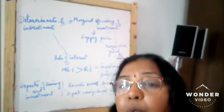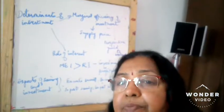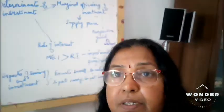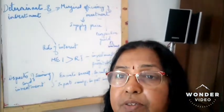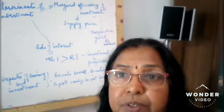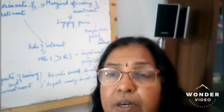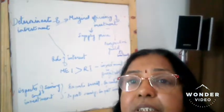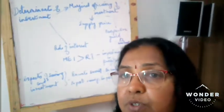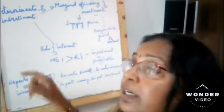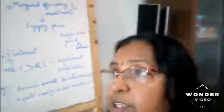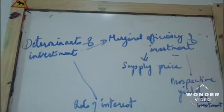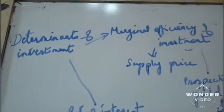We have seen all the values of APC, APS, MPC, and MPS. Now we will see the determinants of investment. We have seen autonomous investment and induced investment, and how to draw those curves. Now we will see determinants of investment.